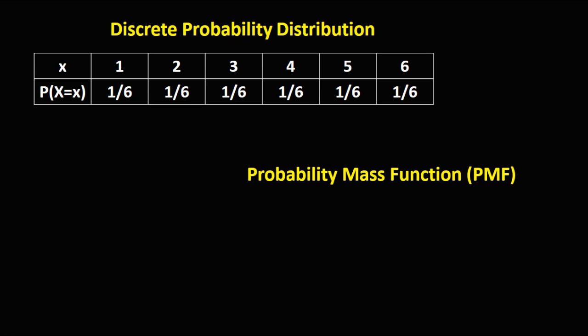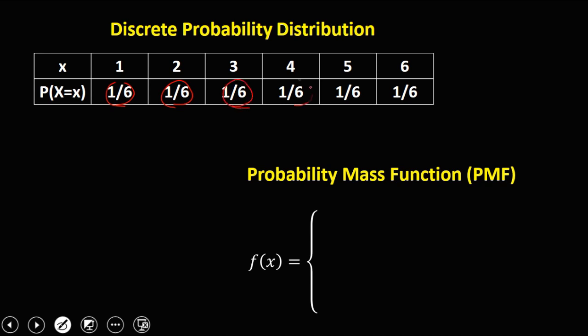So to rewrite this distribution as a probability mass function: since this given has the same probabilities, that's 1 over 6, the probability is 1 over 6 if x is 1, 2, 3, 4, 5, and 6.